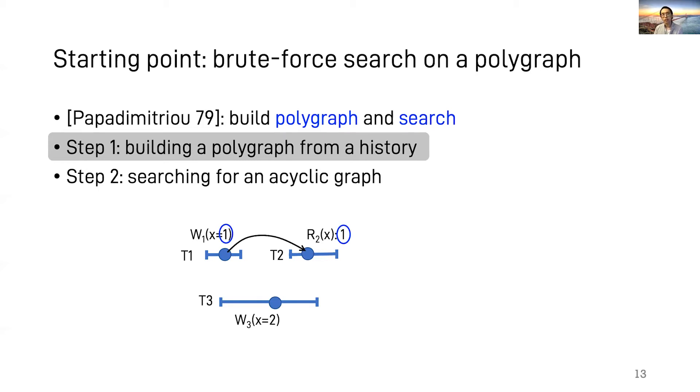So by pairing the values, we know the fact that T2 reads X from T1, indicated by this edge. In order to have a total order, T3 must either happen before T1 or after T2, indicated by these two dashed edges. T3 cannot happen in between T1 and T2 because otherwise T2 should have read X from T3 instead of T1.